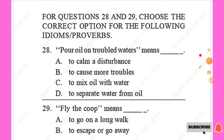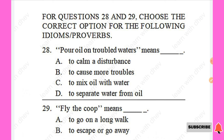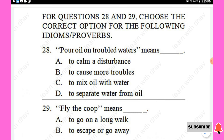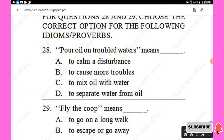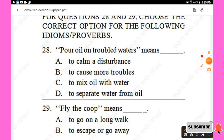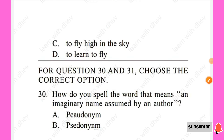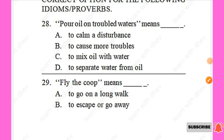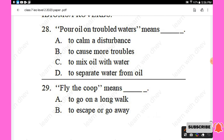For questions 28 and 29, choose the correct option for the following idioms or proverbs. Question 28: 'Pour oil on troubled waters' means — to calm a disturbance, to cause more trouble, to mix oil with water, to separate water from oil. The right answer is 'to calm a disturbance.' Question 29: 'Fly the coop' means — to escape or go away. Option B is the right answer.